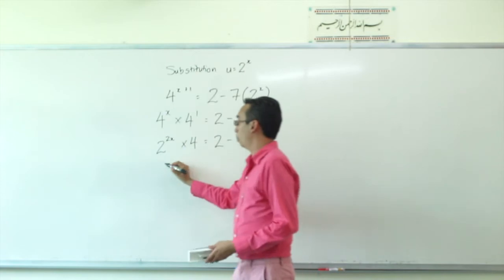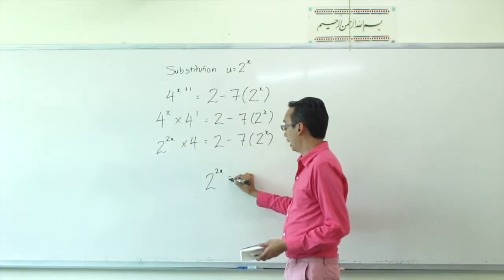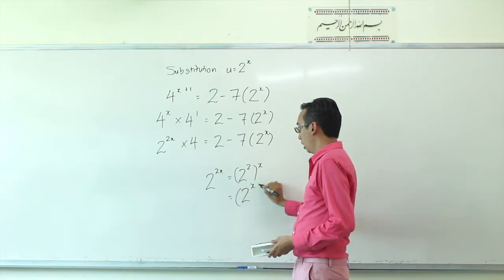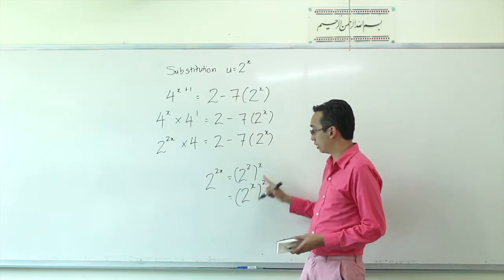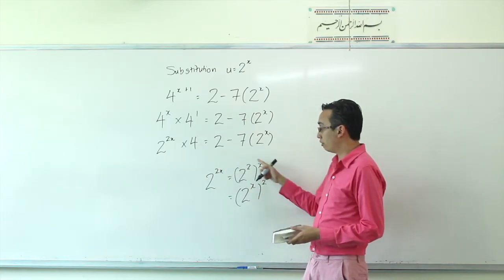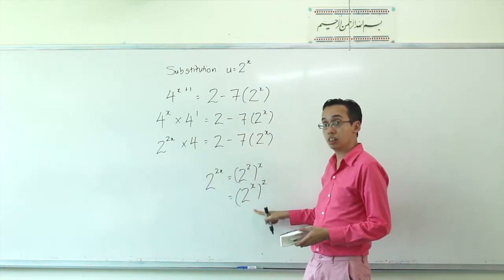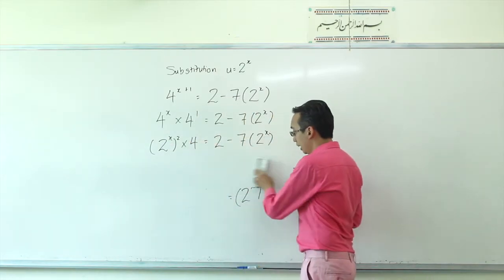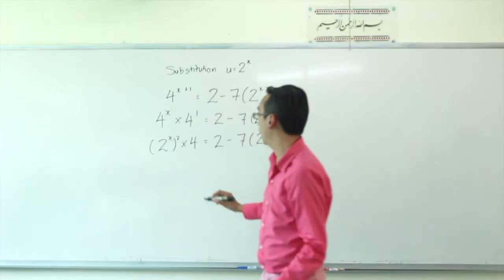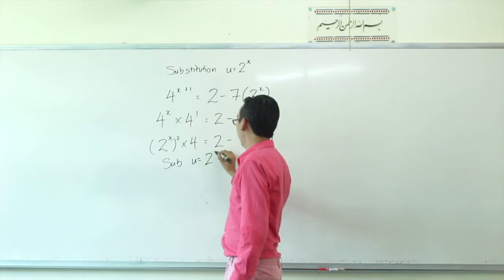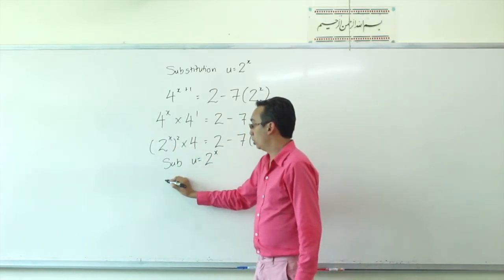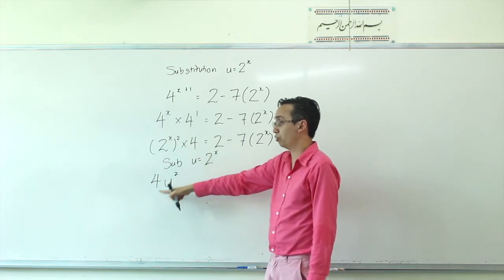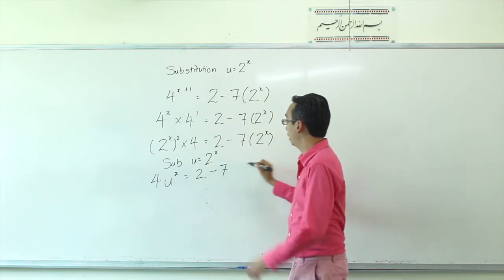2 to the power of 2X can be written as 2 to the power of 2, raised to the X, or as 2 to the power of X, squared — because both equal 2X. Let's write it as 2 to the power of X, with the square on the outside. Now substituting U for 2 to the power of X, this becomes U squared times 4, so 4U squared. The right-hand side becomes 2 minus 7U.